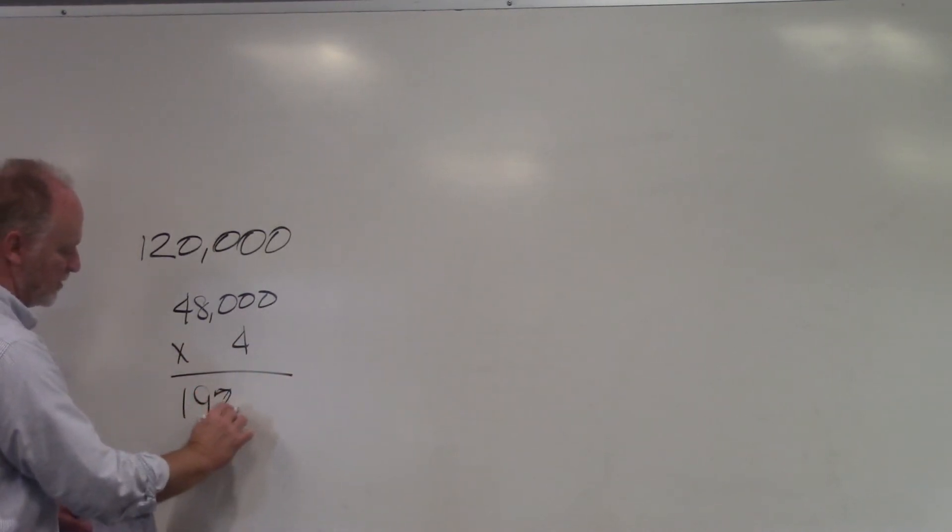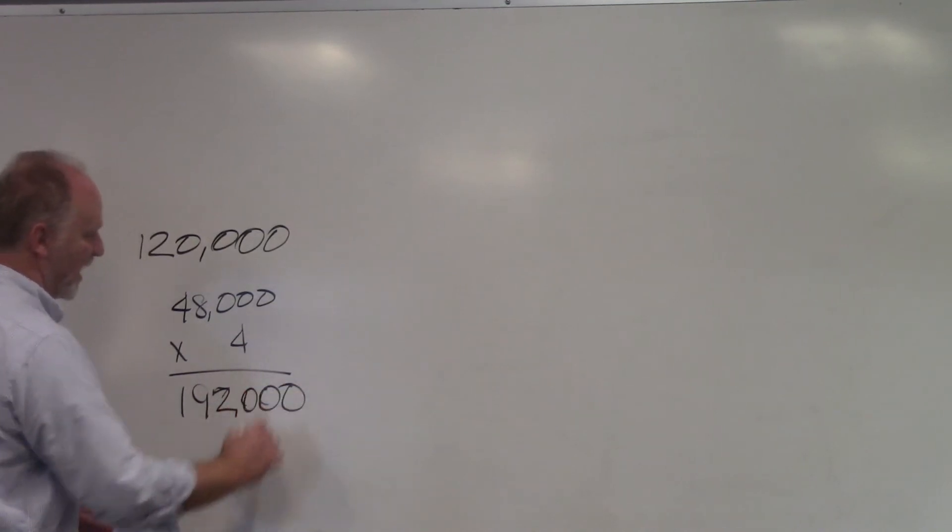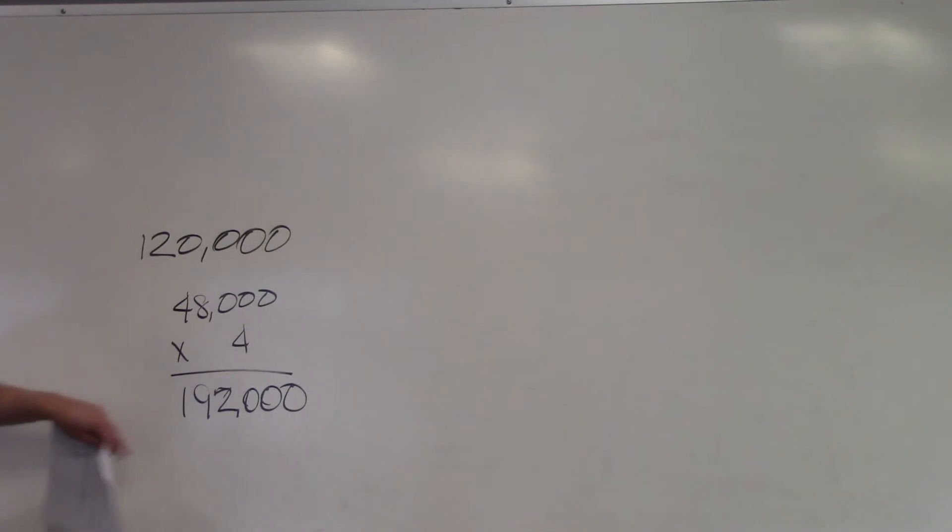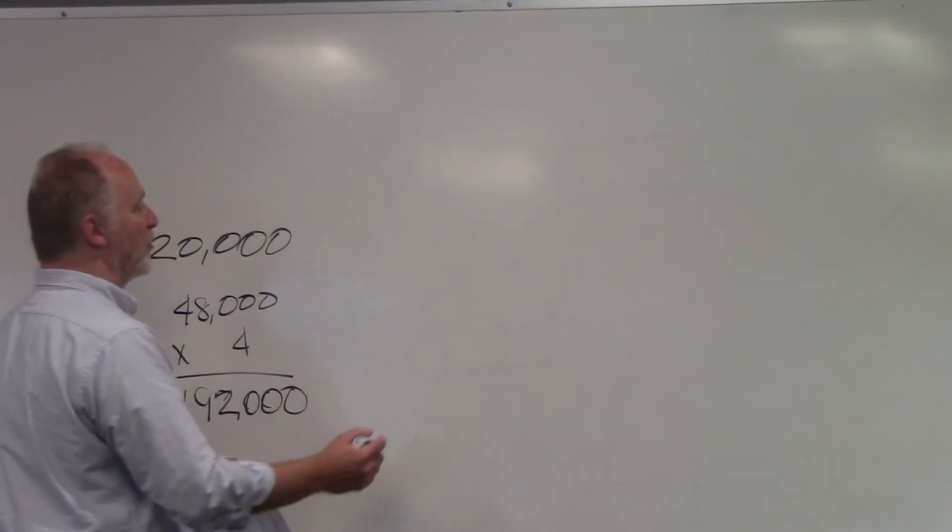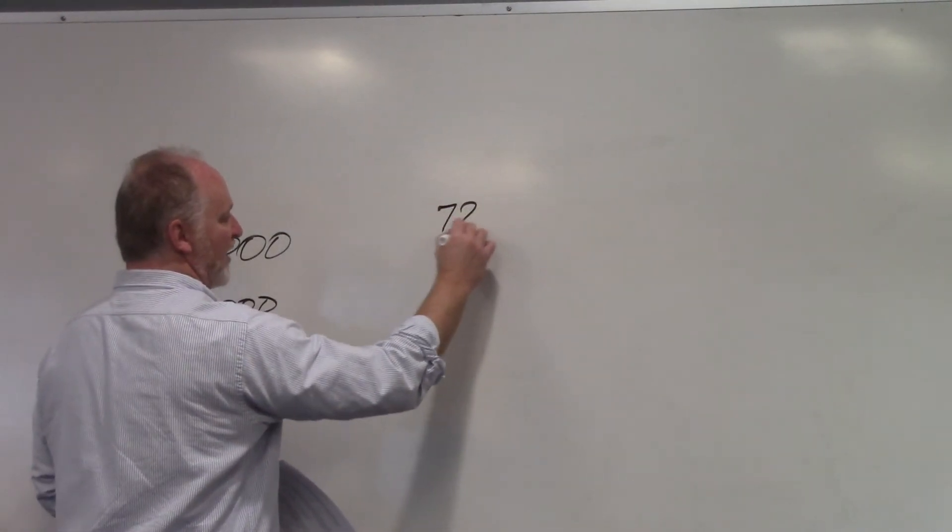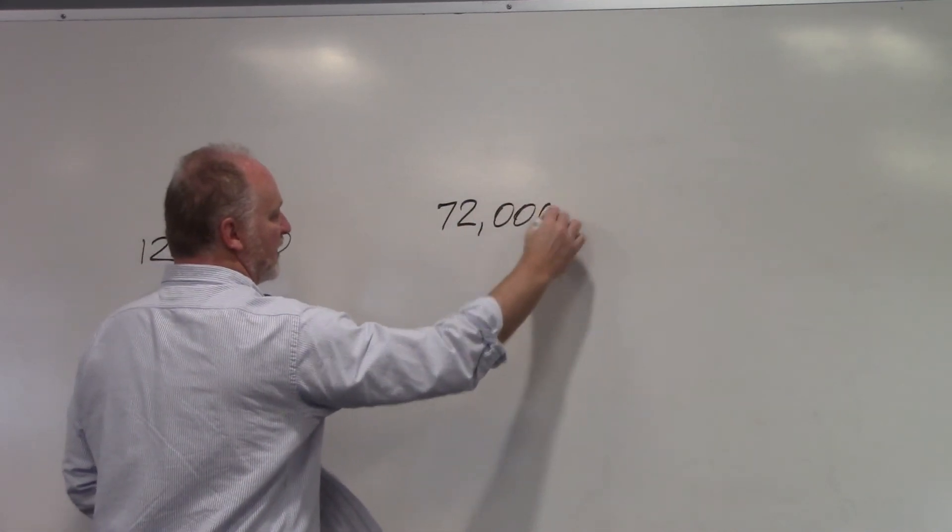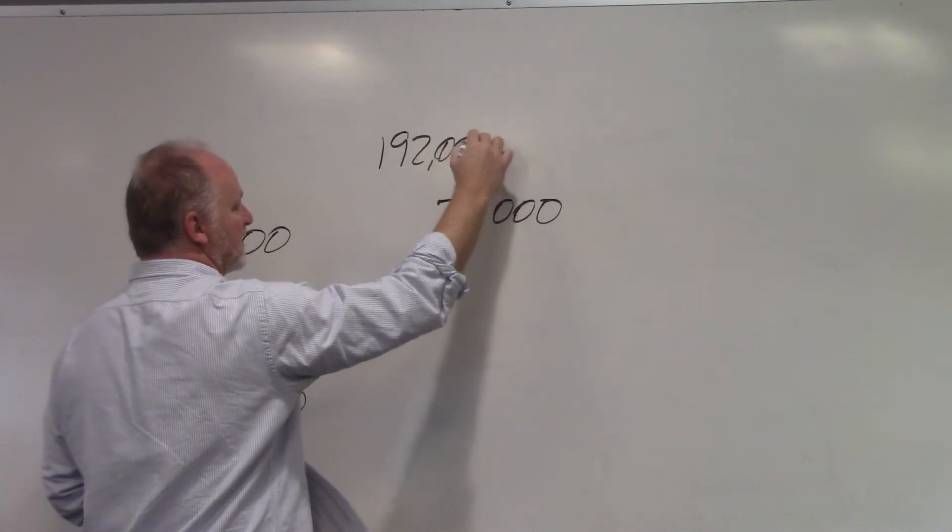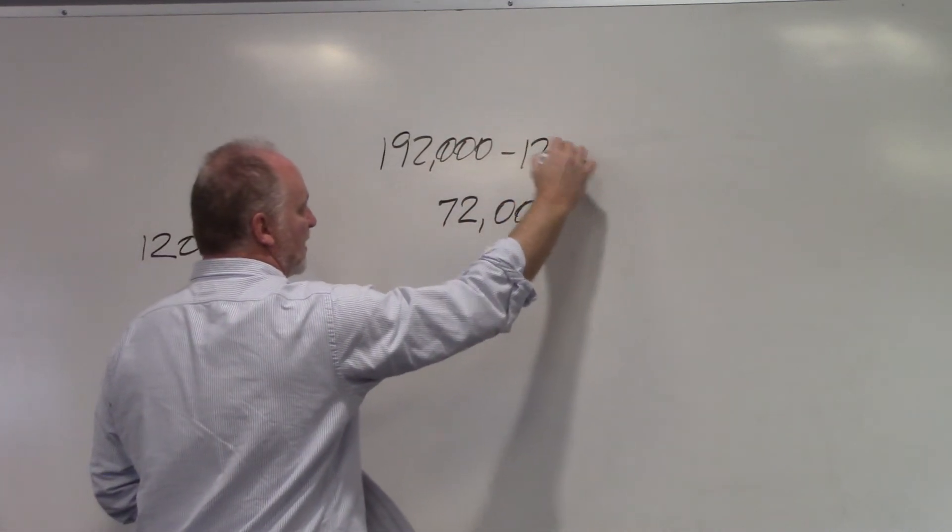He sold for $192,000. All right, if he bought it for $120,000 and sold it for $192,000, what was his actual dollar profit? $72,000. $72,000 was his dollar profit. That was, what did we say, $192,000 minus $120,000, okay?